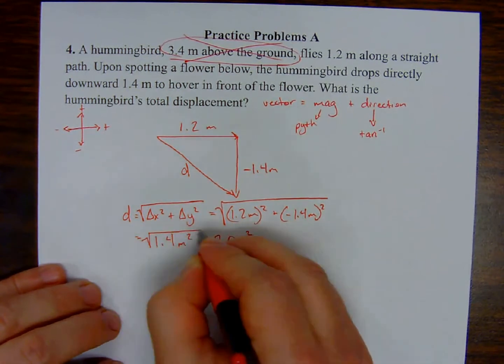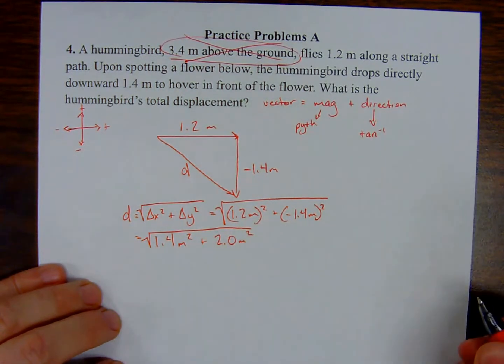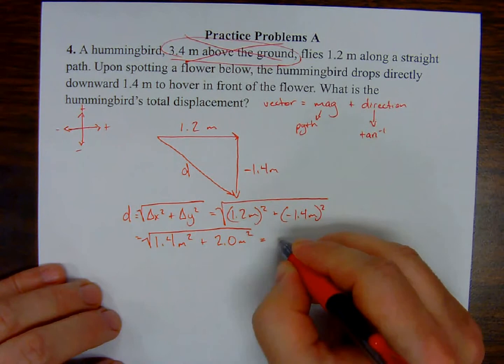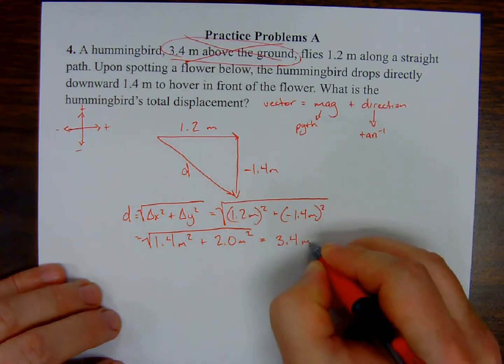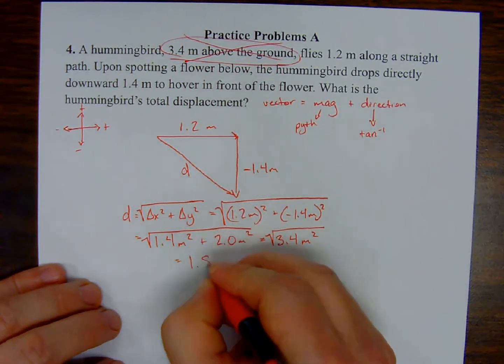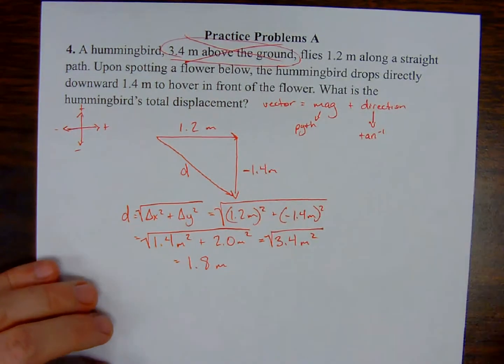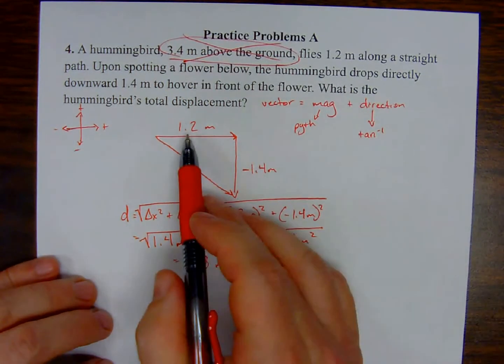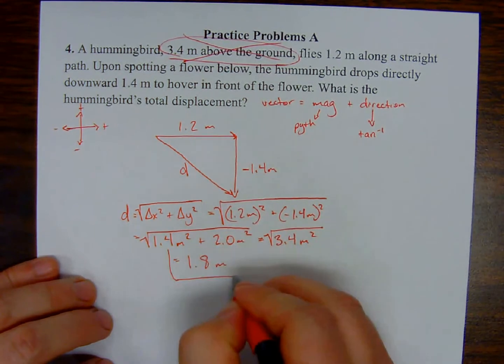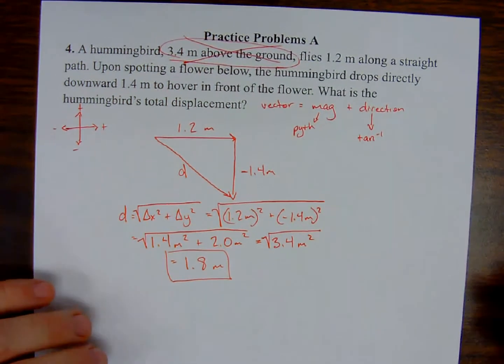I end up with 3.4 meters squared, but I still have it square rooted. When I do square root, using the appropriate number of significant figures, I'm just going to use two significant figures here because that's both the values that I have, 1.8 meters. The calculator is giving me a whole bunch of gobbledygook the vast majority of the time, so I can't just rely on copying what the calculator says. I have to use the appropriate number of significant figures.